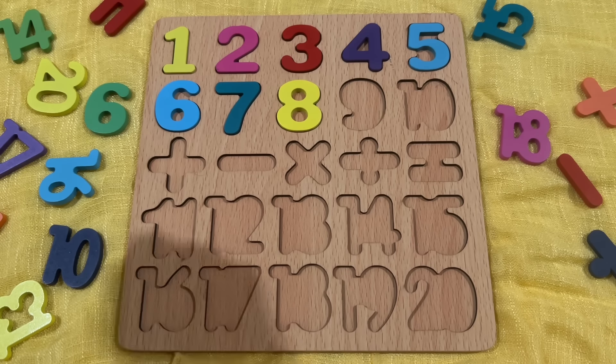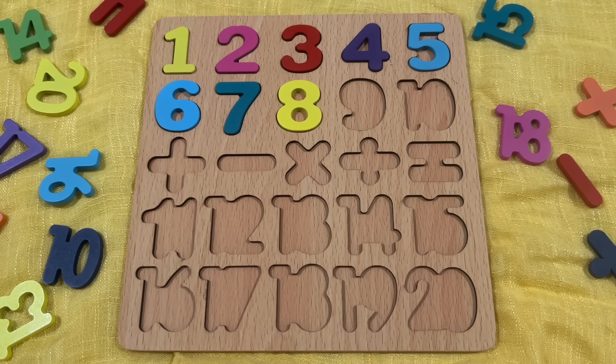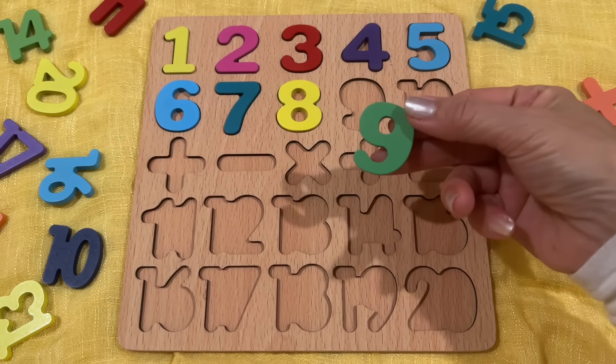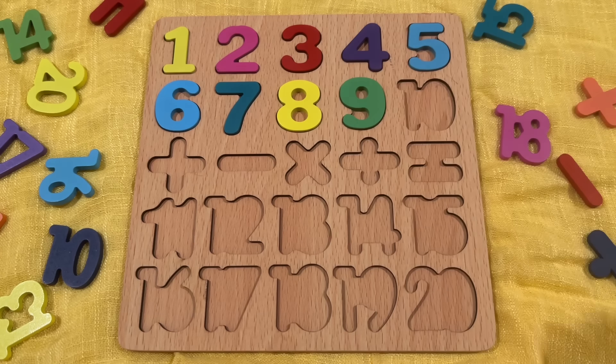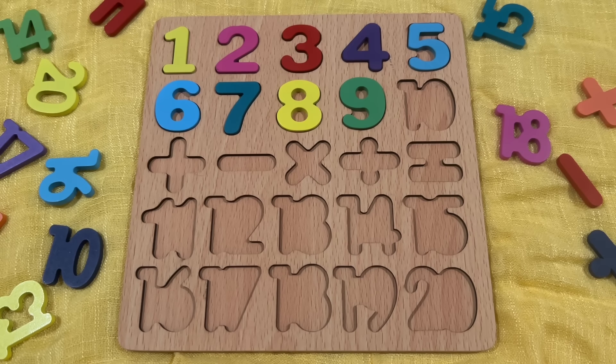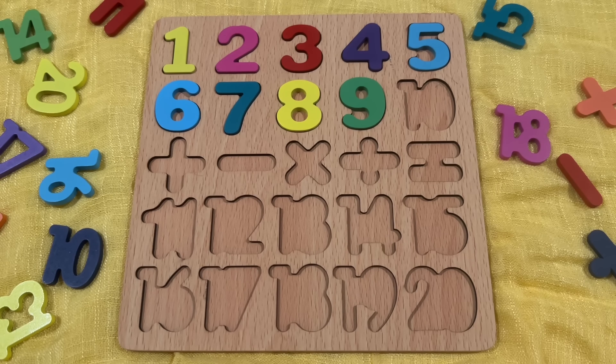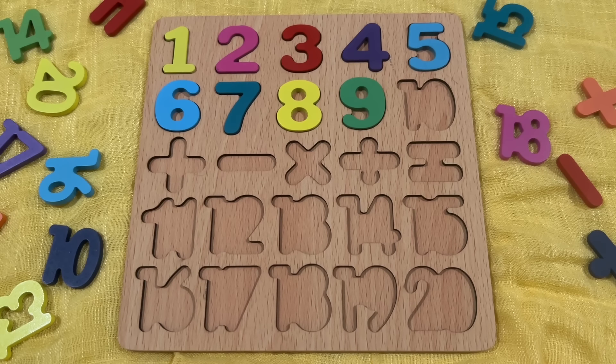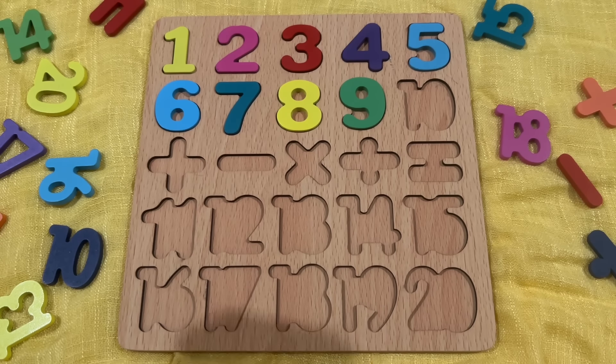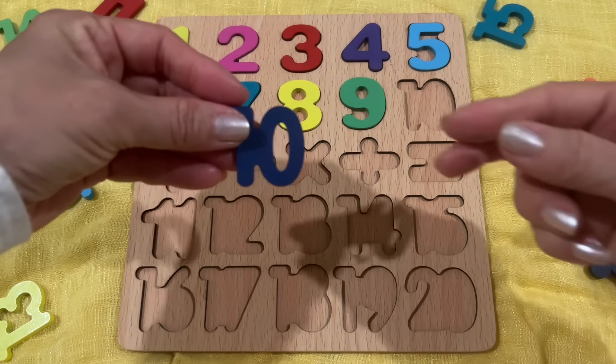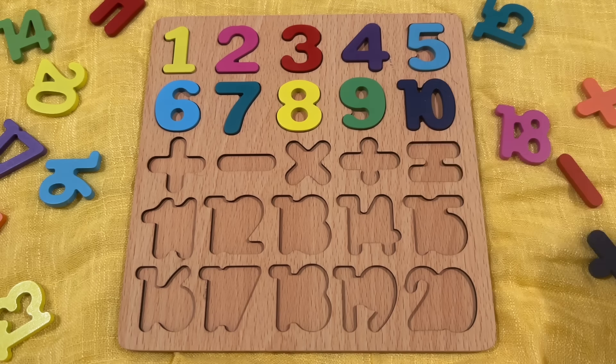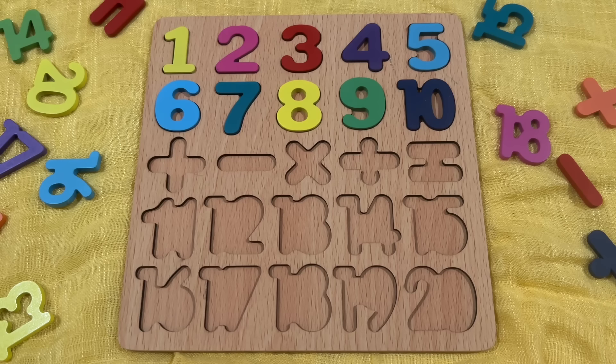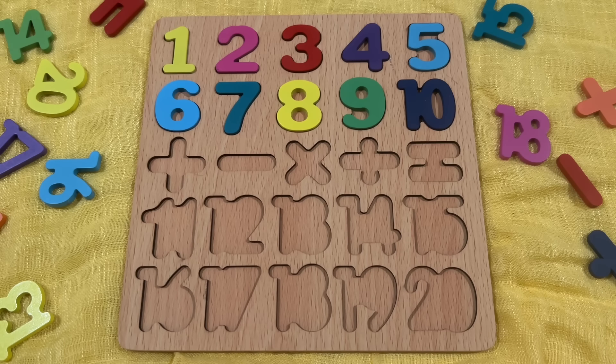Where's number 9? Here it is, number 9, 9. In English, we say 9. In Korean, we say 구 (gu). Number 9 in Korean is 구. What comes next, boys and girls? Let me see. Number 10, 10. In English, we say 10. In Korean, we say 십 (ship).